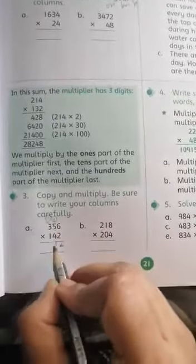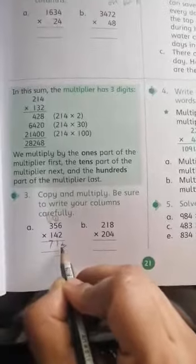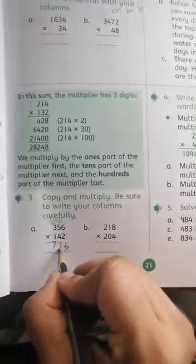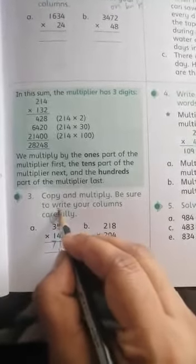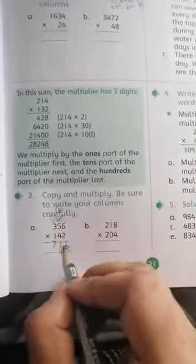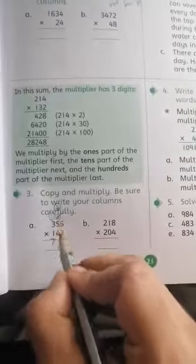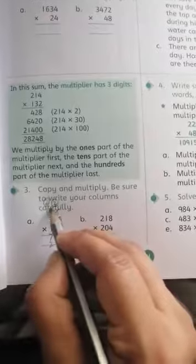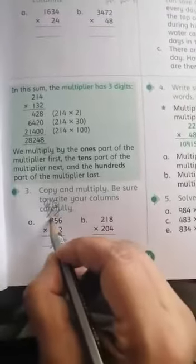2 times 3 is 6 plus 1 is 7. That's done. You cross the first number. 4 times 6 is 24, 2 is carry. Cut the 1. 4 times 5 is 20 plus 2 is 22. Then your 2 carries and the 1 is crossed.